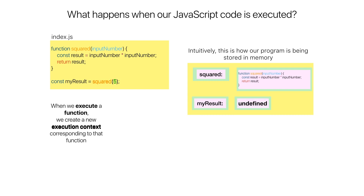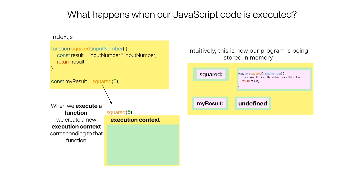Anytime we execute a function, we create a new execution context that corresponds to that function. Here we are executing the squared function and passing the value five. This gives rise to what is commonly referred to as local memory, otherwise known as the variable environment. We look up the function definition of squared in memory to proceed.